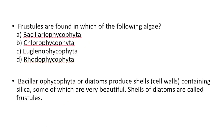Frustules are found in which of the following algae? Option A: Bacillariophycopyta, Option B: Chlorophycopyta, Option C: Euglenophycopyta, Option D: Rhodophycopyta. Answer: Bacillariophycopyta, or diatoms. Diatoms produce shells containing silica, and the shells of diatoms are called frustules.